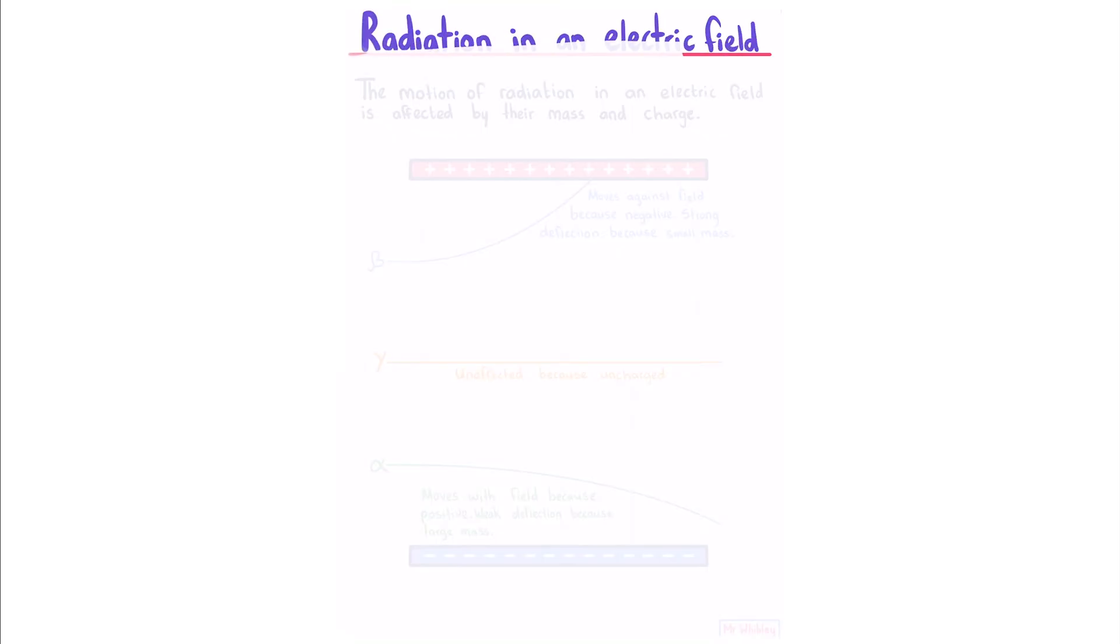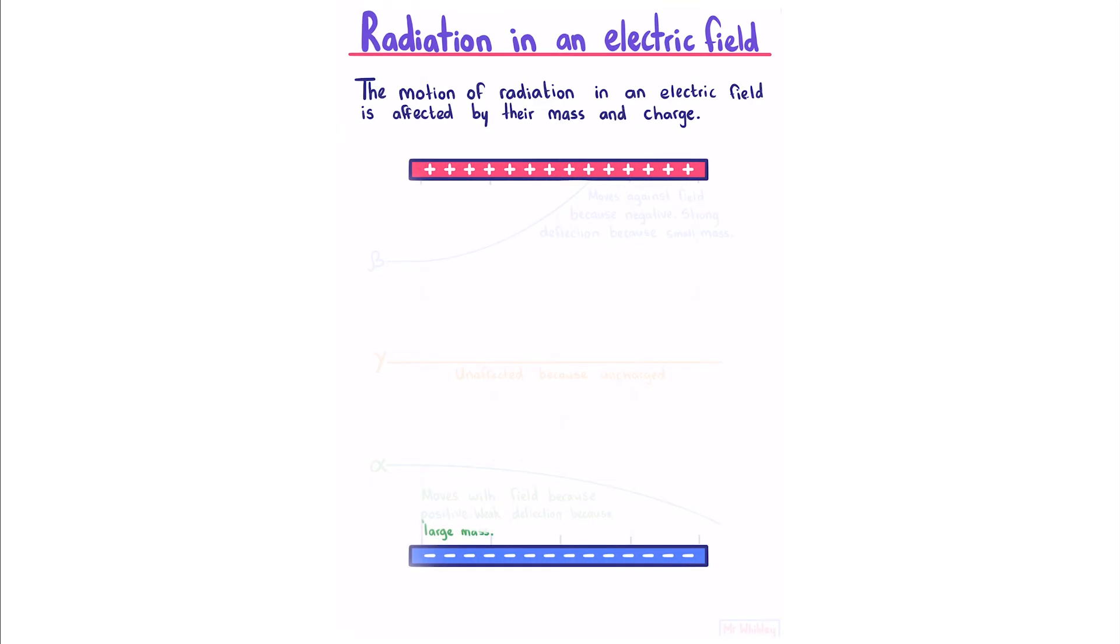Radiation in an electric field: The motion of radiation in an electric field is affected by their mass and charge. If we consider two plates, positive and negative, establishing an electric field between them.